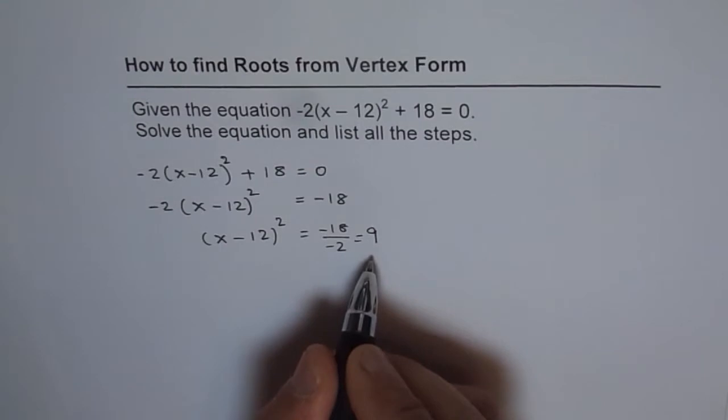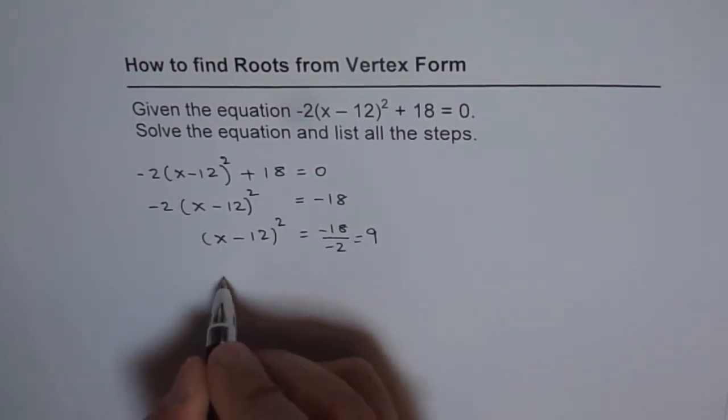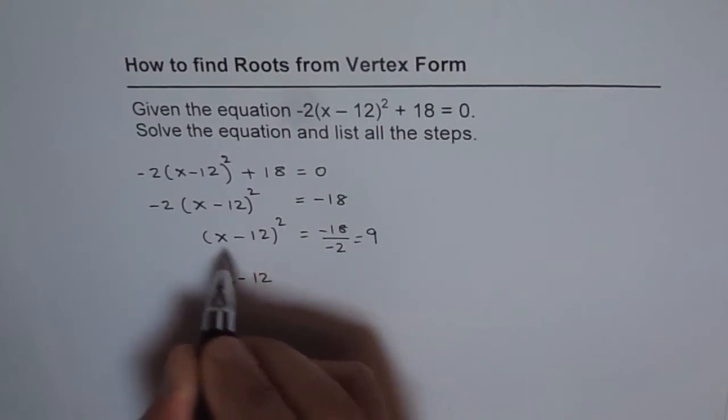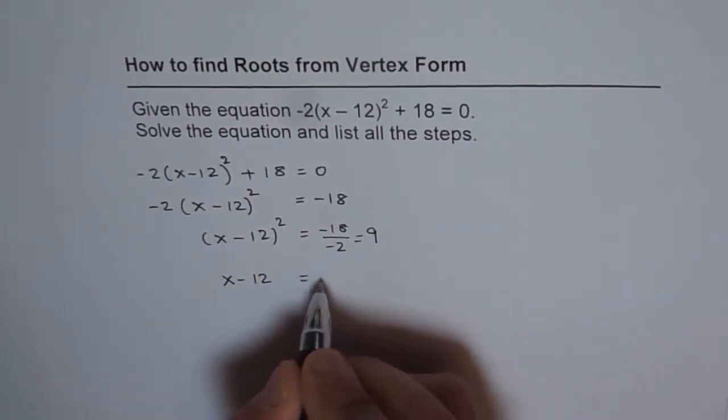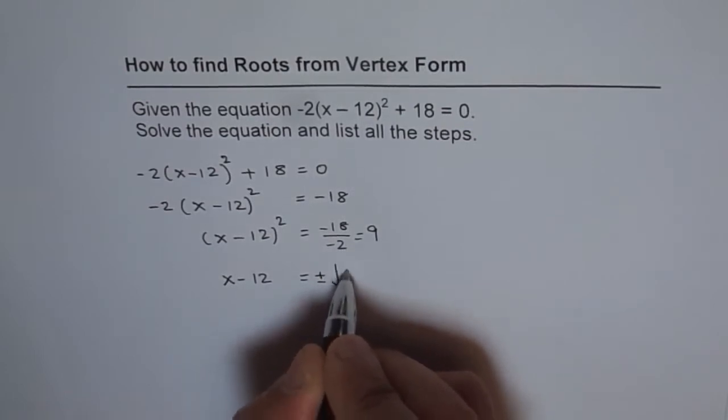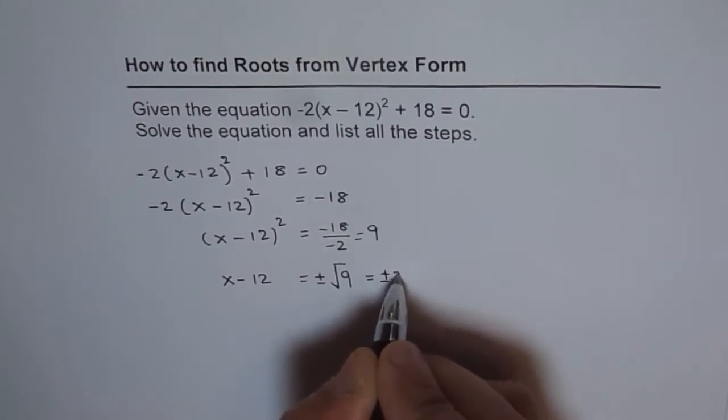Now you square root both sides. When you square root, remember to do plus and minus. We get x - 12 when you square root this side and get rid of the square term. On the other side, you get ±√9, and ±√9 is ±3.